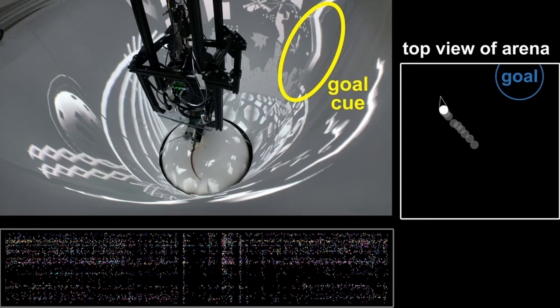We represent the goal cue with a blue circle, the animal's location with a white dot, and its body direction with a triangular arrow.